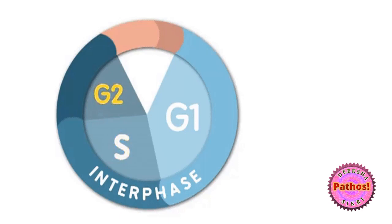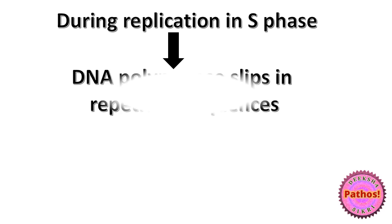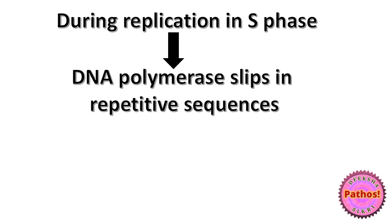Now, if we go to the cell cycle — S phase, G2, M, G1, G0 — we know that replication occurs in the S phase. When this replication is occurring, DNA polymerase has a tendency to slip when it's trying to replicate the repetitive sequences. Imagine you read something many times and think, I know this, I've done this before. So DNA polymerase similarly tends to slip, which means there will be some mismatch problems.